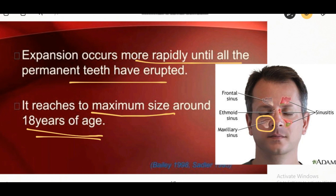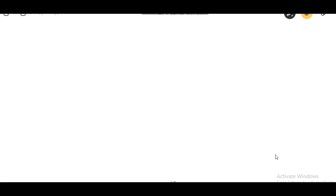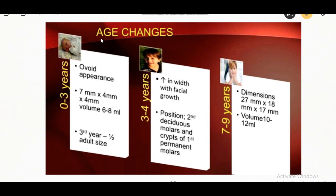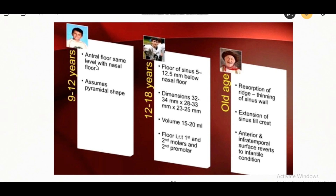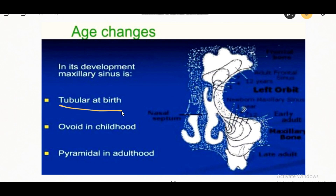The maxillary sinus expansion occurs more rapidly until all the permanent teeth have erupted. Age changes in the maxillary sinus: at 0 to 3 years it is ovoid in appearance; at 3 to 4 years there is an increase in width with facial growth; at 9 to 12 years it assumes a pyramidal shape. In old age there is resorption of the ridge and thinning of the sinus wall. In development, the maxillary sinus is tubular at birth, ovoid in childhood, and pyramidal in adulthood.